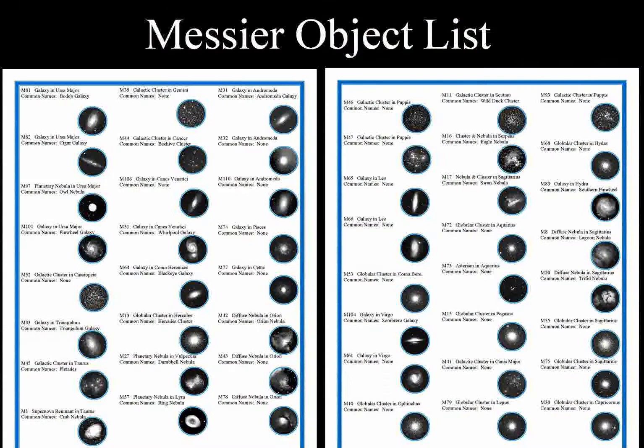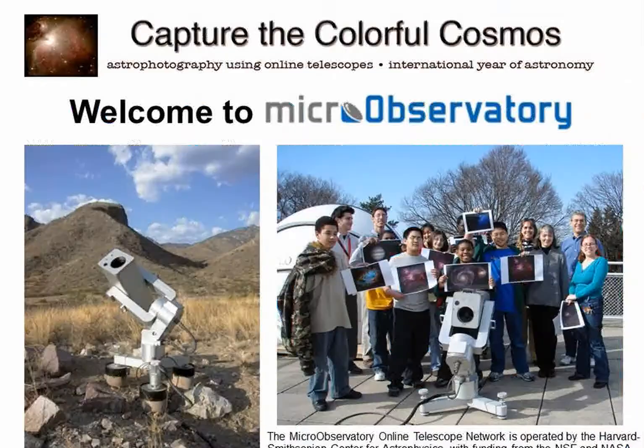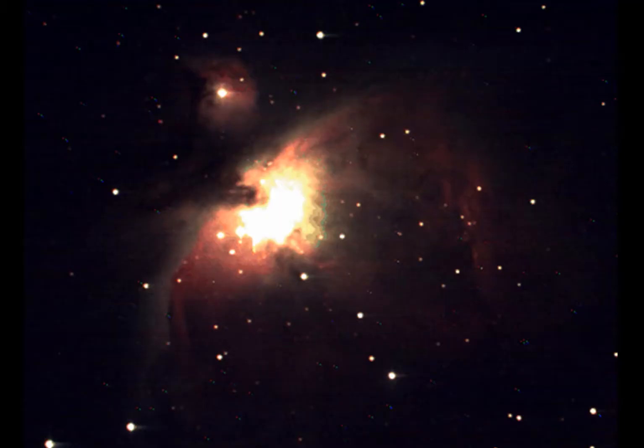For the class project, you will choose a celestial object from the Messier object list. Then you will go to the Observing with NASA website and request an image of that object from the micro observatory robotic telescopes.